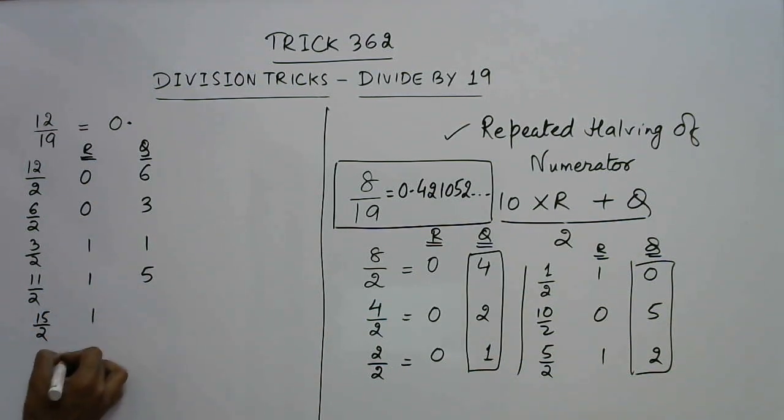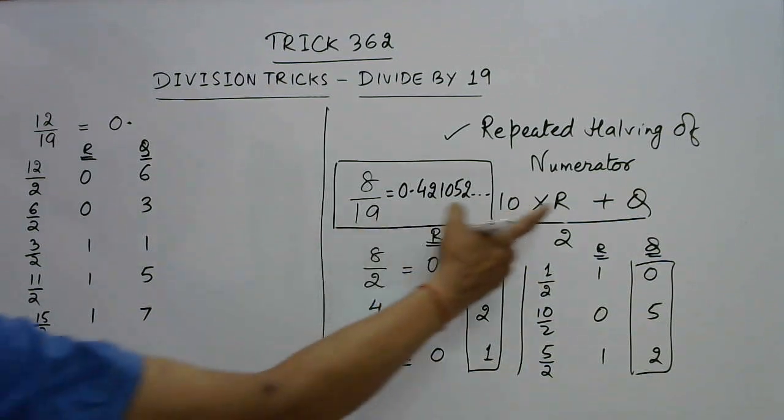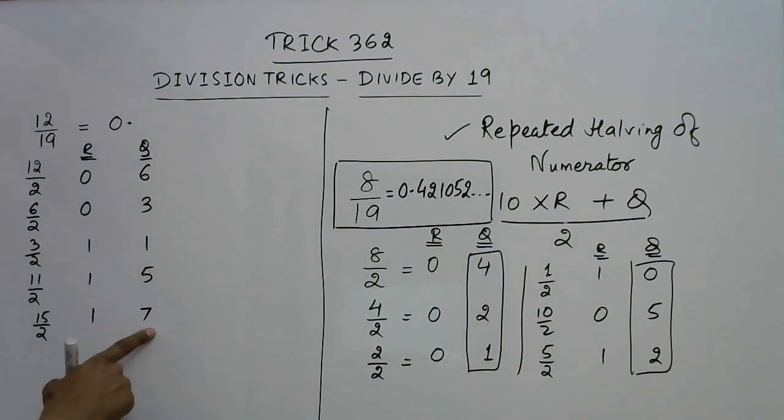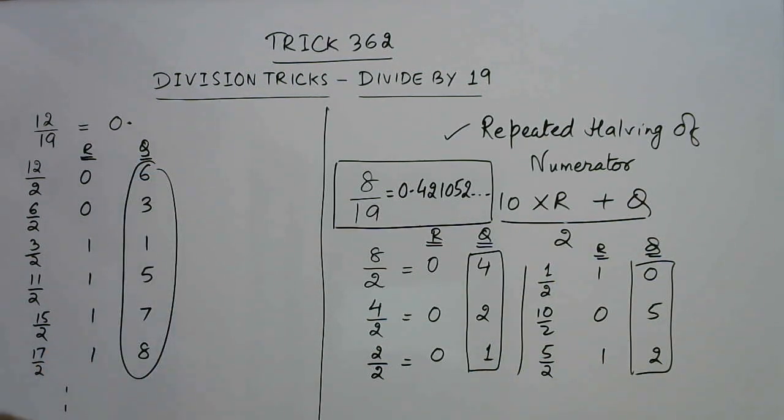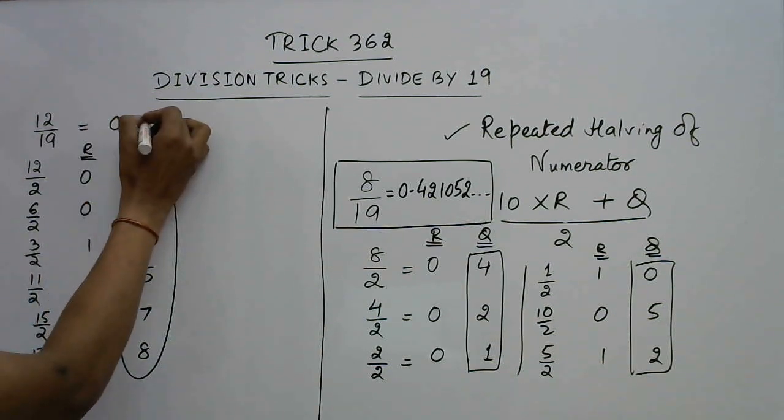Now if you put it here, 10 plus 7 is 17. So 17 by 2, remainder 1 and 16 by 2 is 8. So see you are getting these digits and now you can repeat this procedure.